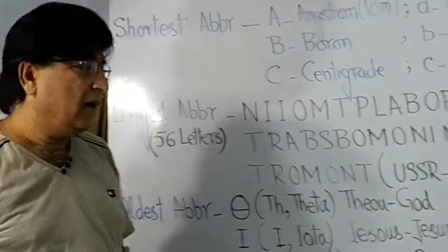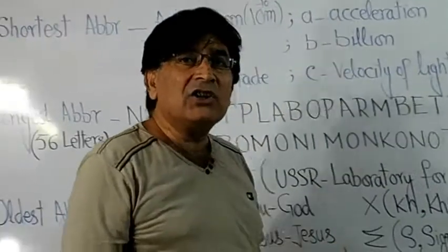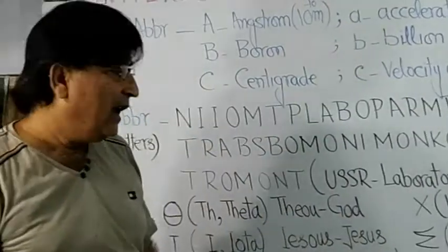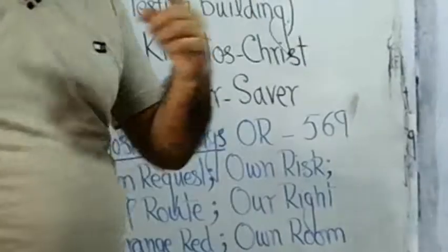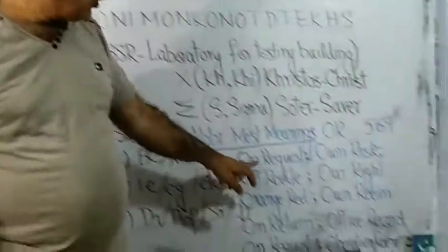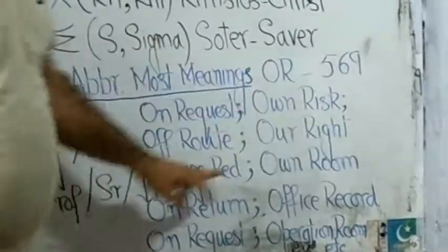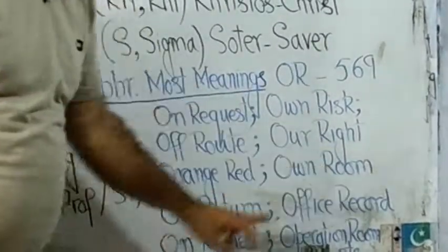The fifth fact about abbreviation is very astonishing. 'OR' is an abbreviation which has the largest number of meanings — it is an abbreviation for 569 different words. For instance: OR means on request, OR risk, off route, or write, orange red, on route, on return, office record, on request, operation route, and so on.